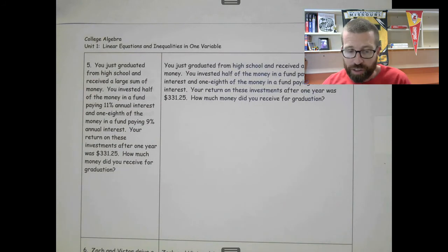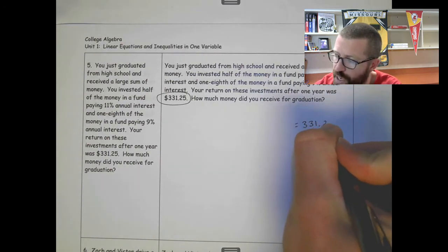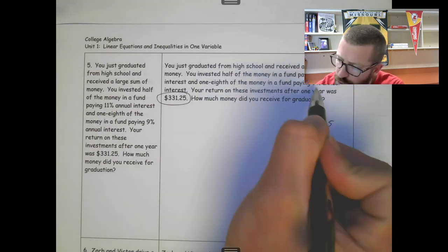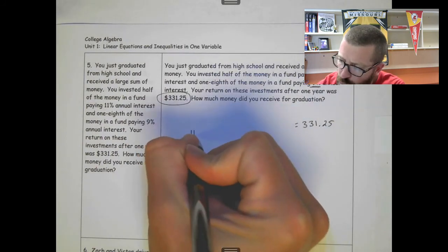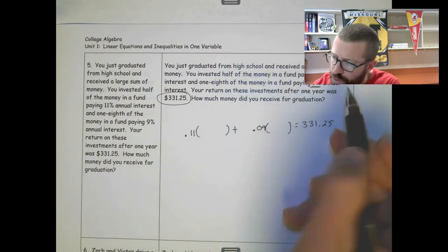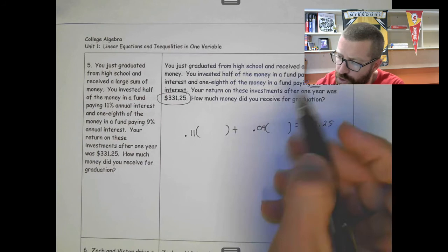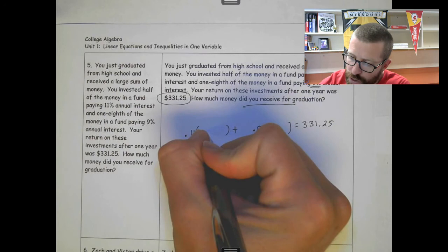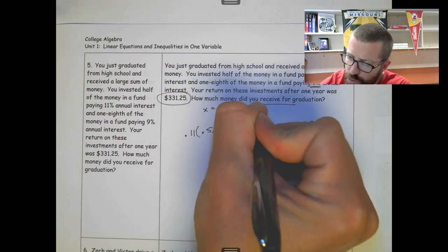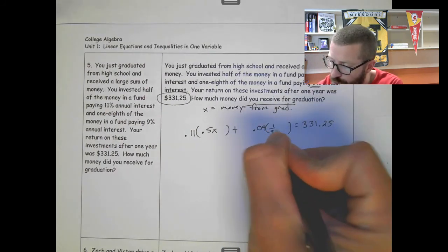This is a similar type question. Your return is 331.25. The first account was 11 percent and the second was 9 percent, so 0.11 and 0.09. You invested half of the money in a fund paying 11 percent and one-eighth of the money in a fund paying 9 percent. Half of the money would be 0.5 times x, where x is the money from graduation. And one-eighth of the money would be one-eighth times x.